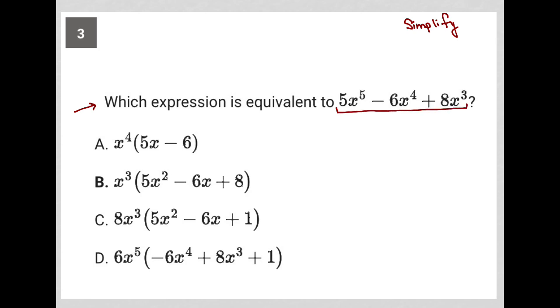The question says, which expression is equivalent to 5x to the fifth minus 6x to the fourth plus 8x cubed? Taking a glance at our answer choices, we see that we're being asked to factor by pulling out the greatest common factor amongst these three terms.